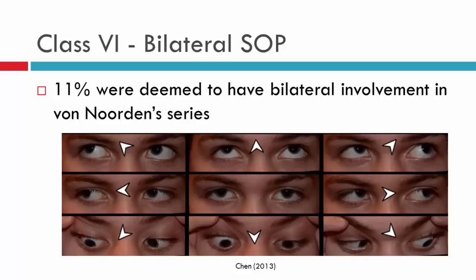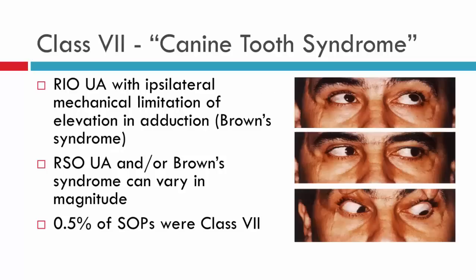Class six is the bilateral superior oblique palsy, in which instance we expect to see the clinical features discussed in the previous video. And finally, class seven — also known as canine tooth syndrome. It's called canine tooth syndrome because it has been associated with dog bites. Class seven is associated with trauma to the trochlea; it doesn't have to be a dog bite, it can be any type of trauma, and sometimes it can even be a penetrating injury that affects the trochlea.